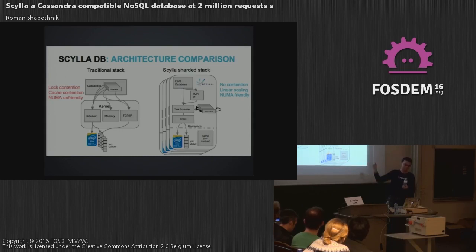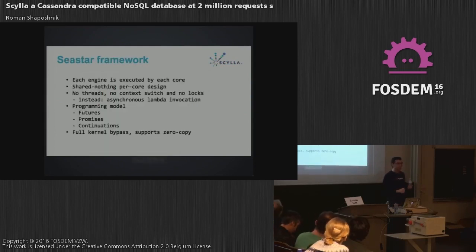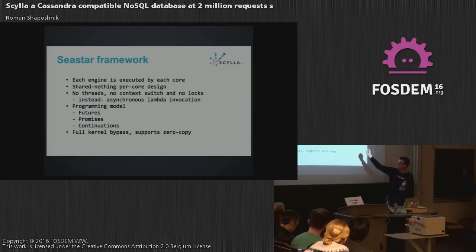The CSTAR framework is managing all of the queues for the scheduler. Memory management is the same deal — it's basically per-core memory buckets that don't require any kind of synchronization. The CSTAR framework is something you really should check out, because it's a way to build highly concurrent applications using C++. It's built on programming models familiar to modern-day engineers: futures, promises, and continuations. And it does full kernel bypass and supports zero-copy.